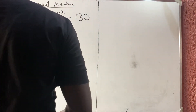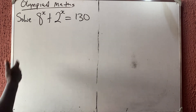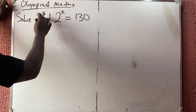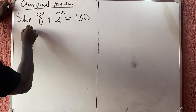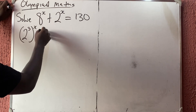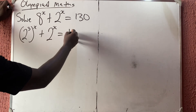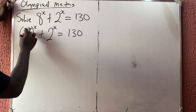Let us quickly solve this olympiad math question — it's an indices question. The first thing to do is bring the base down: 8 can be written as 2 raised to power 3, so we have 2 raised to power 3 then raised to power x, plus 2 raised to power x, equals 1/3.